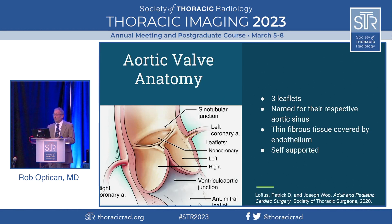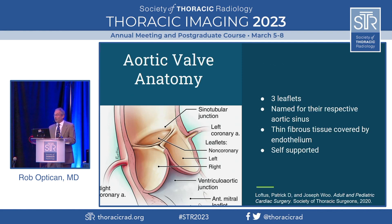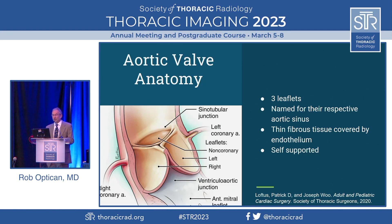In their typical tri-leaflet configuration, aortic valve leaflets are named for the coronary sinus at which each leaflet is attached in a semicircular fashion. For example, the left coronary leaflet attaches to the left coronary sinus, the right to the right, and so on. We'll touch upon bicuspid valves in a second. There are also rare variants of quadricuspid and even unicuspid aortic configurations. The leaflets are incredibly thin, composed of a few thin layers of fibrous connective tissue covered on both sides by a thin layer of endothelial cells. They're self-supported during closure by the nature of the aortic root attachment, and hence there's no need for papillary muscles.